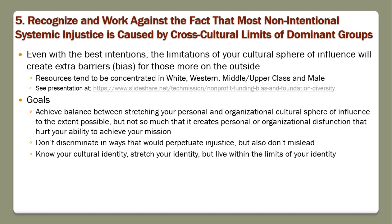We've got to recognize and work against the fact that most non-intentional systemic injustice is caused by the cross-cultural limits of dominant groups. If white men historically have had more power and education, then the limitations of their cultural sphere of influence are going to create extra barriers — non-intentional bias — for those more on the outside. Resources tend to be concentrated in white, Western, middle and upper class, and male. I did a much longer presentation about nonprofit funding bias and foundation diversity that got several thousand views.